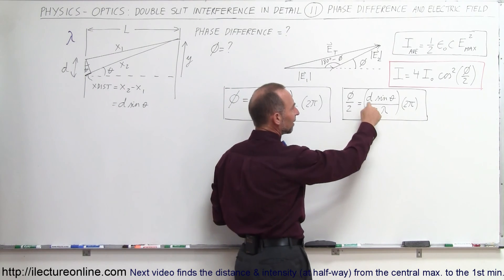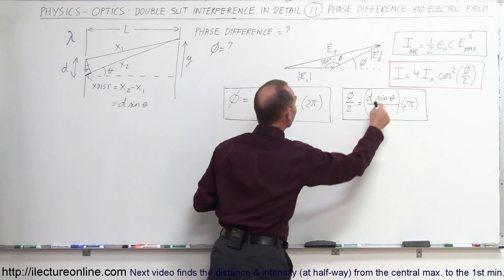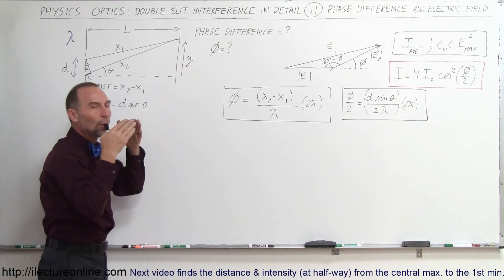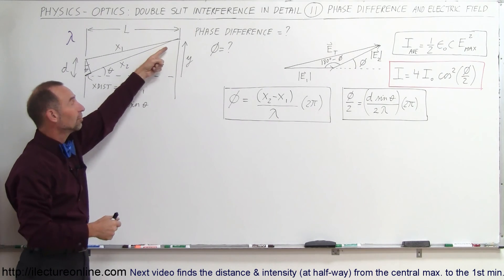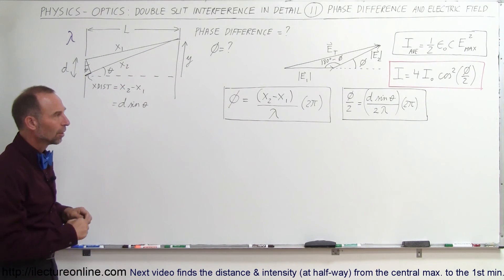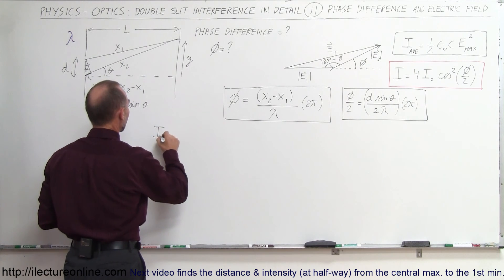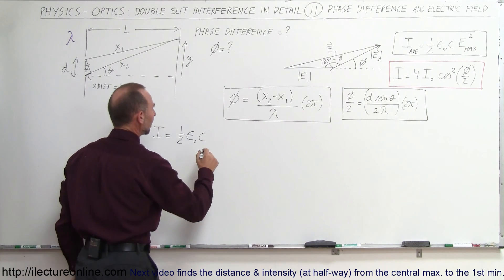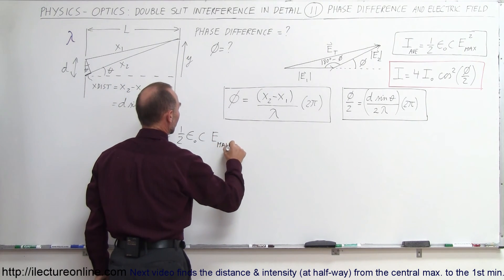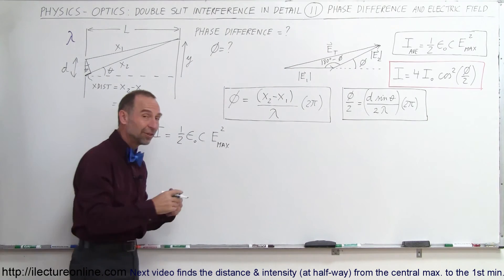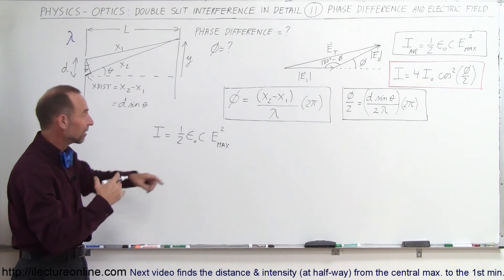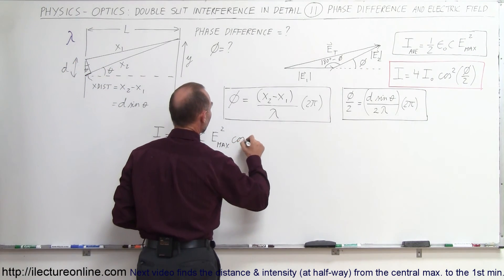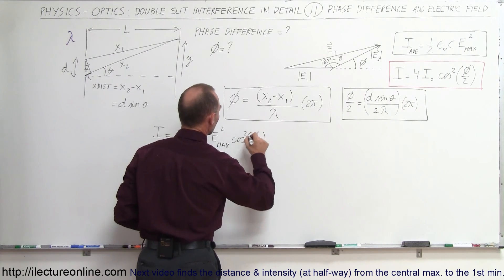Here, λ is the wavelength of the light, d is the distance between the two slits, and θ is the angle from the two slits to a point on the screen where we want to know the intensity based upon the phase difference. The intensity can be found as one-half ε₀ times the speed of light times E_max squared — the electric field oscillation maximum of the light through the slits — times the cosine of φ/2, quantity squared.